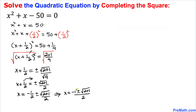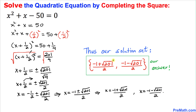If we split these two signs we are going to get two solutions. The first is X = (−1 + √201) / 2 and the second is X = (−1 − √201) / 2. And here is our solution set — that is our final answer. Thanks for watching, and please don't forget to subscribe to my channel for more exciting videos. Bye!